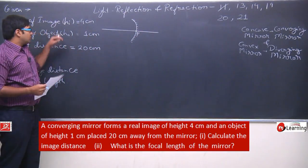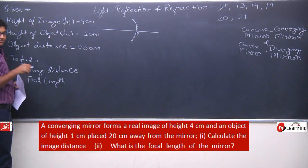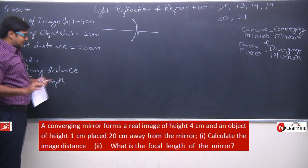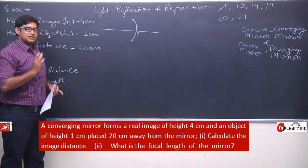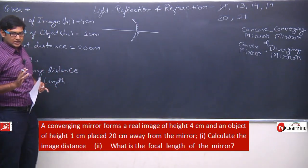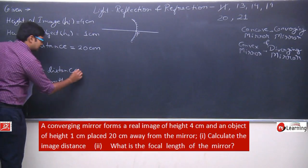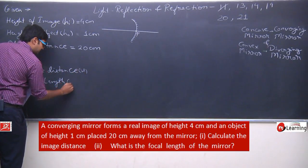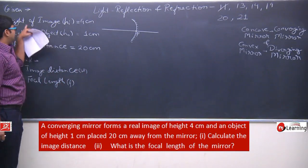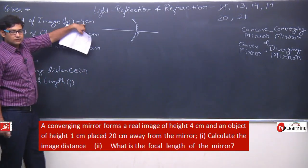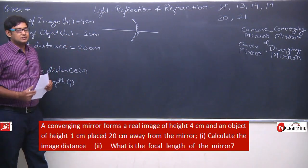So image distance is negative. We now know this distance is negative. But by default, we will keep it positive as we proceed — the negative sign will appear automatically in the answer. Image distance is represented by v, and focal length by f.